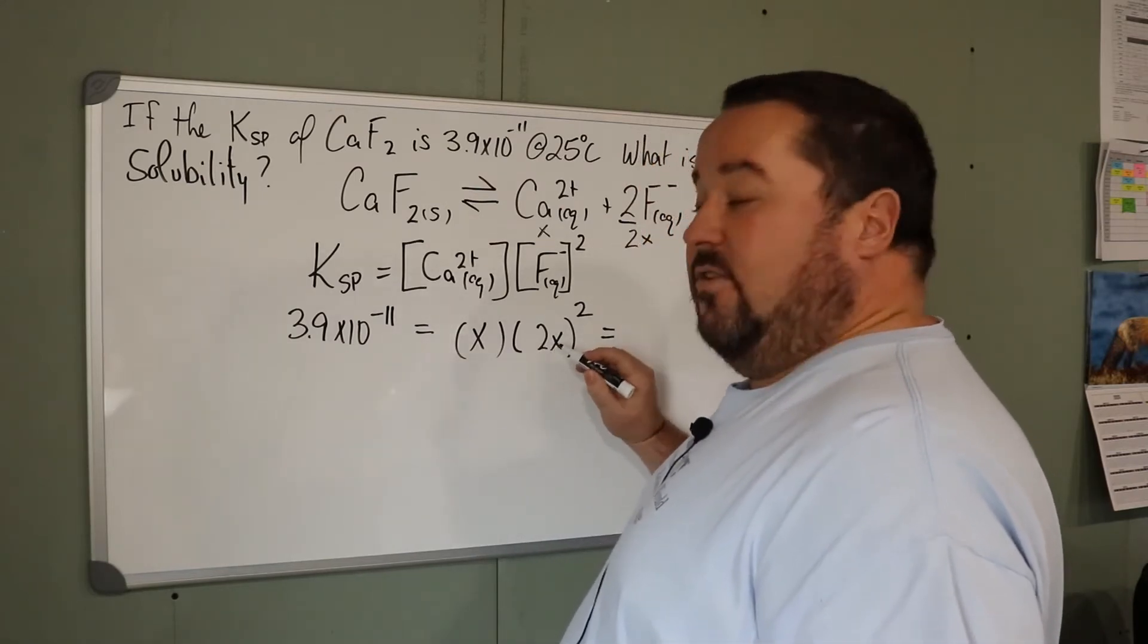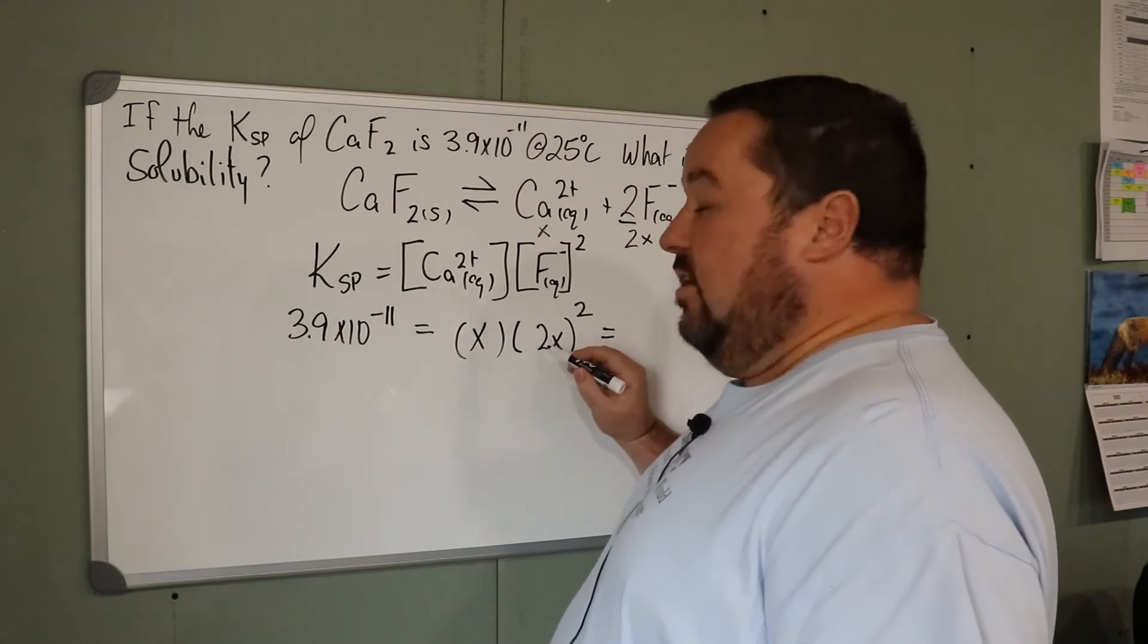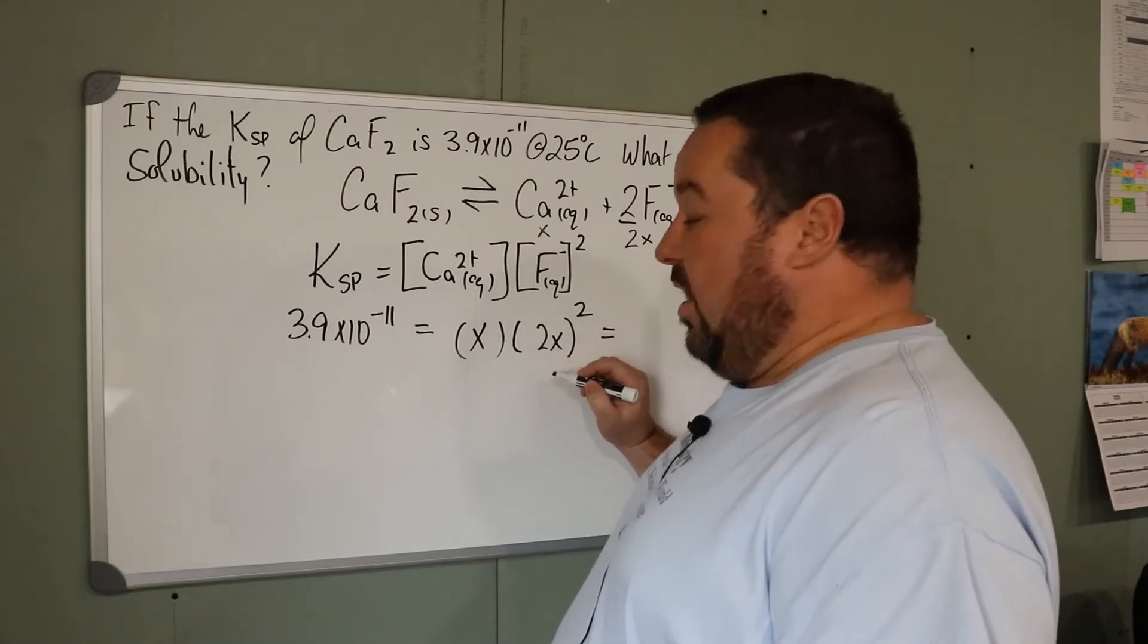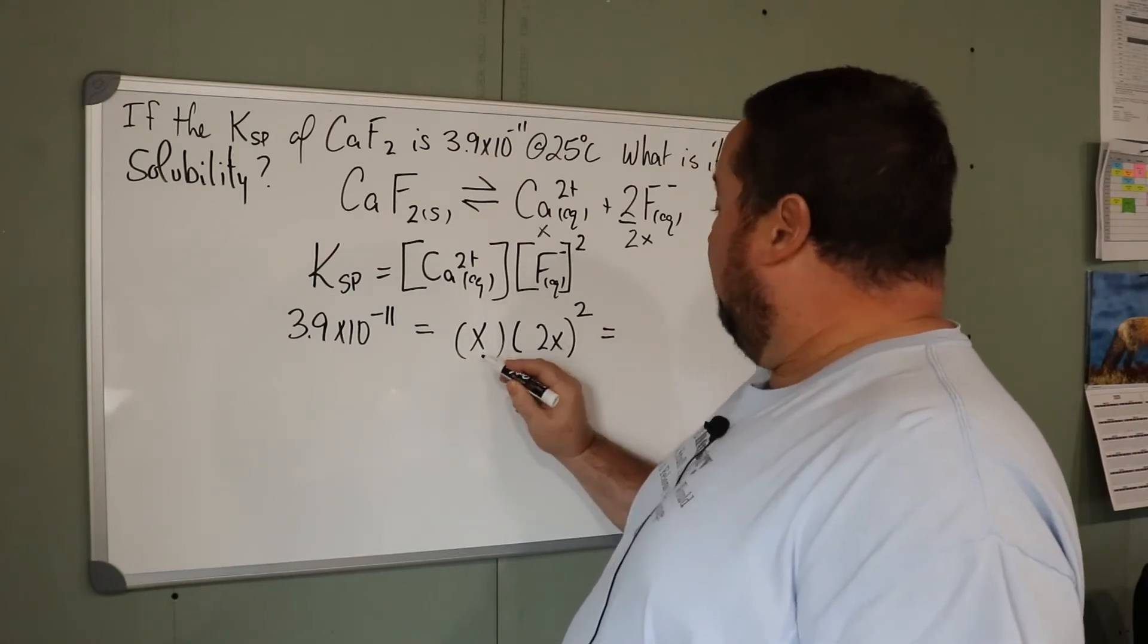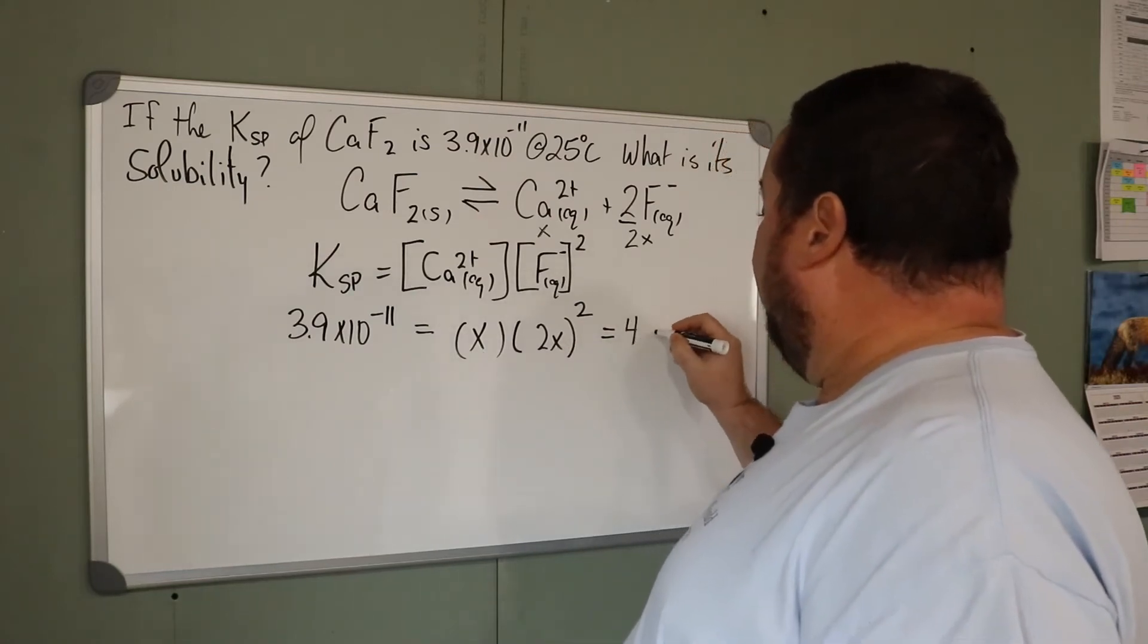Often people will look at this and say 2X squared. But don't forget, you're squaring everything in the brackets. So it's going to be 4X squared, and multiply by another X. So we end up with 4X cubed.